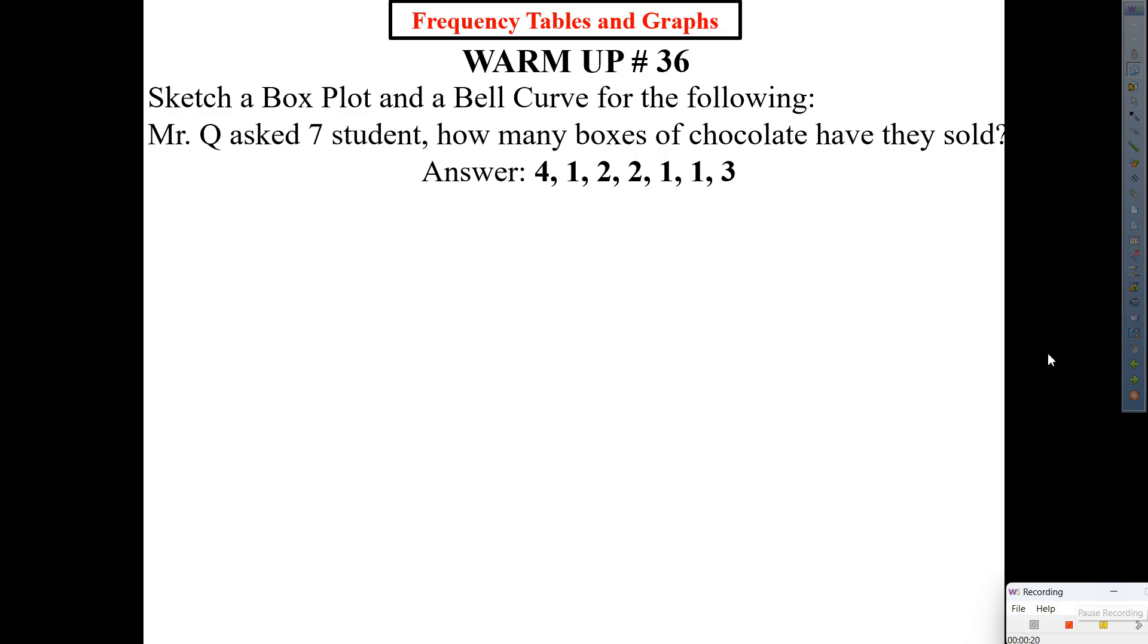So the warm-up reads: sketch a box plot and a bell curve for the following. Mr. Q asked seven students how many boxes of chocolate they sold. Answer: one of them said four, one of them one, two, two, another two, one, and the last one, three.